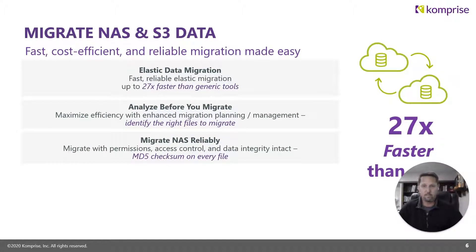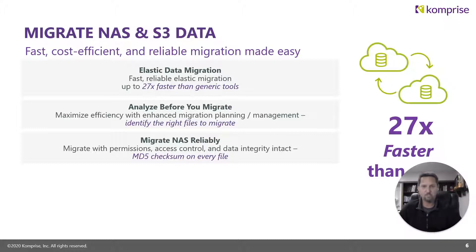Our Elastic Data Migration for NAS and S3 is a very fast, cost-efficient, reliable migration solution. It can be 27 times faster than generic tools such as RSync. We can analyze before you migrate to help mitigate issues before they occur, such as permission issues or files that don't need to be migrated and may be better suited for archiving. For NAS reliability, we migrate all permissions and access controls, and validate data integrity at the end of every file transfer using MD5 checksums.